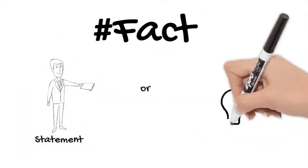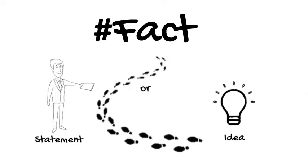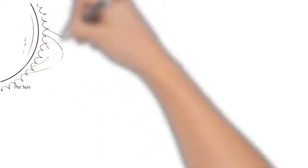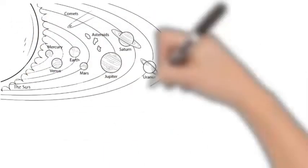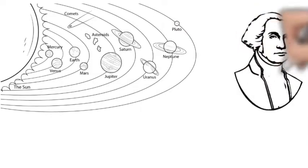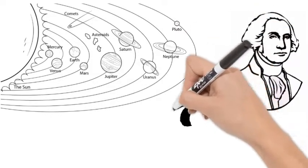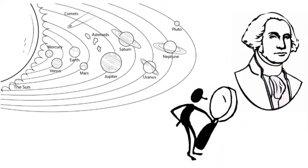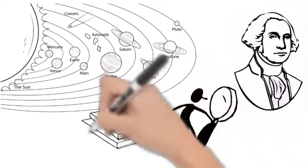A fact is a statement or idea that can be proven true. For example, Mercury is the planet closest to the sun. George Washington was the first president of the United States. These statements are facts because they can be proven true by observation or by consulting a reliable source such as an encyclopedia.